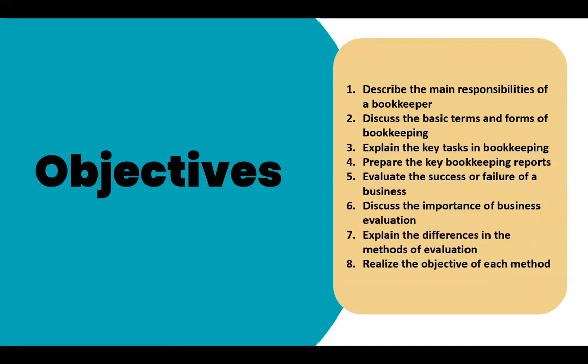At the end of this unit, you should be able to: describe the main responsibilities of a bookkeeper; discuss the basic terms and forms of bookkeeping; explain the key tasks in bookkeeping; prepare the key bookkeeping reports; evaluate the success or failure of a business; discuss the importance of business evaluation; explain the differences in the methods of evaluation; and realize the objective of each method.